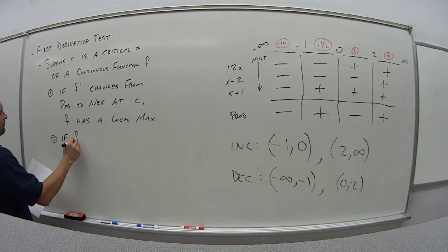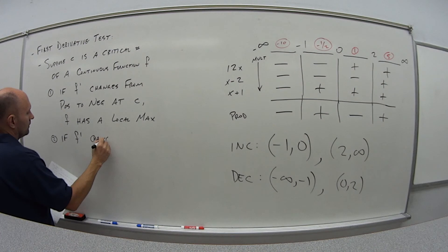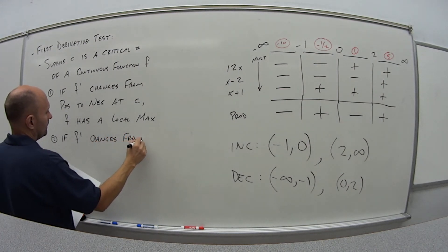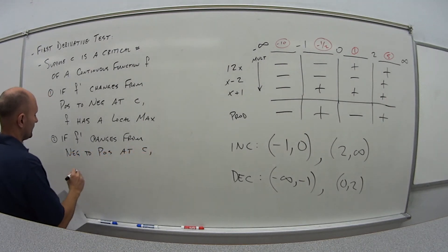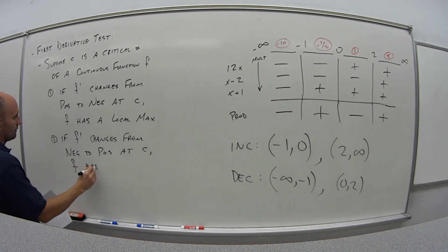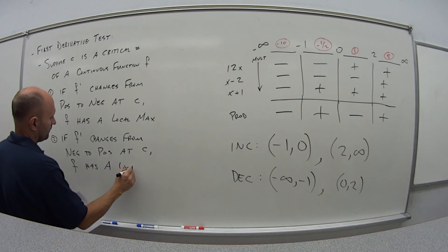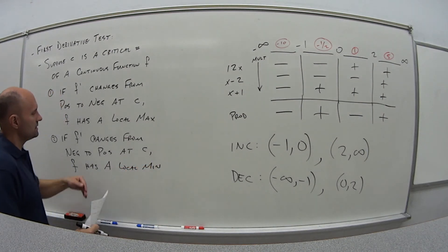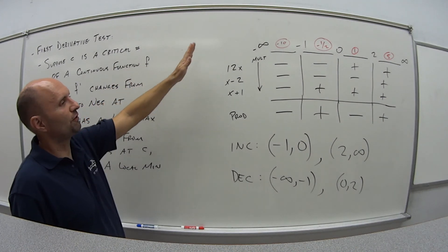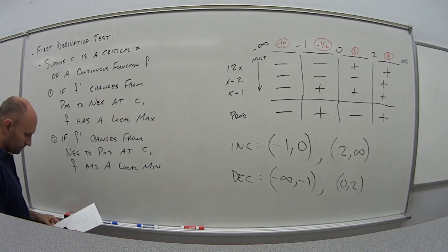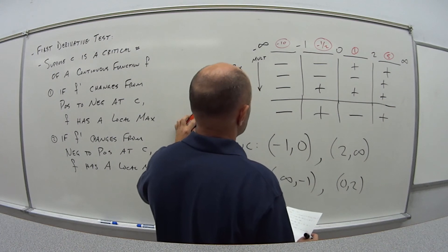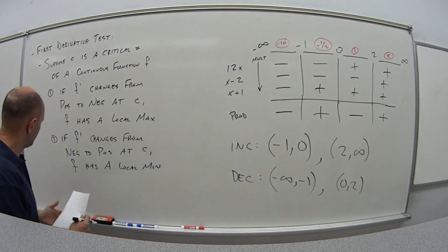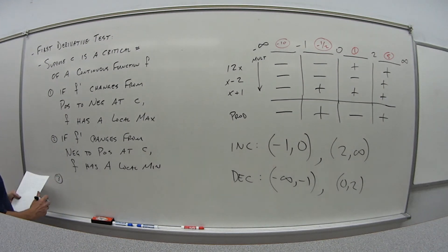Similarly, if f prime changes from negative to positive at c, then f has a local minimum at c — the slope was negative going down, then changes to positive, so that has to be a local minimum. The third possibility is that if f prime does not change sign at c, then f has no local max or min at c.